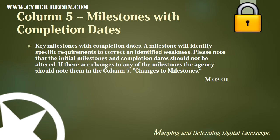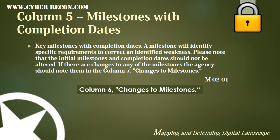Column 5 is milestones with completion dates. A milestone will identify specific requirements to correct an identified weakness. Please note that the initial milestone and completion date should not be altered. If there are any changes to the milestones, the agency should note them in column 7, changes to milestones. It's important to note that this appears to be an error — column 6 is actually changes to milestones, and this discrepancy in alignment of the locked columns would explain why column 4 was not indicated as locked in the instructions.